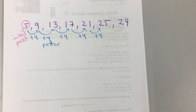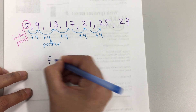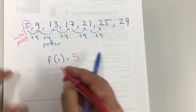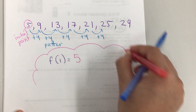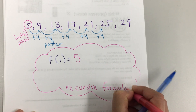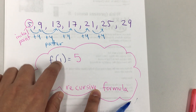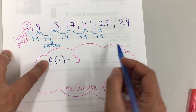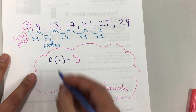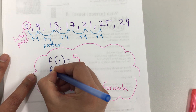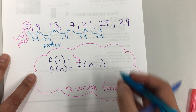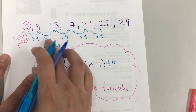For my recursive formula, you will need 2 parts. F of 1, which gives me the initial point — and we already know that the initial point is 5. You're going to be given the sequence and asked to write the recursive formula. It is: f of 1 equals 5, and then f of n equals f of n minus 1, and you include the pattern in here.